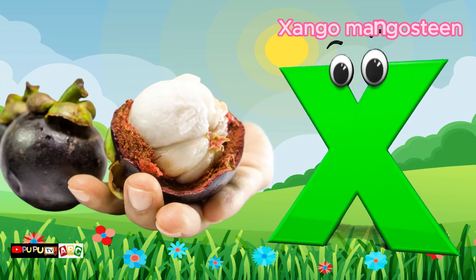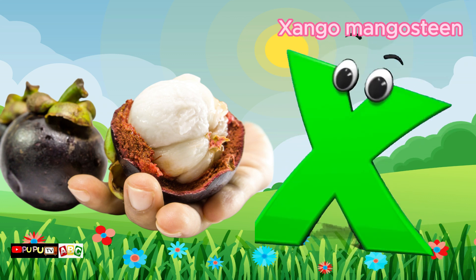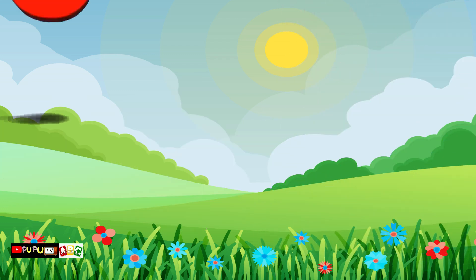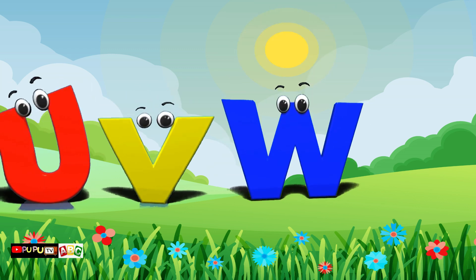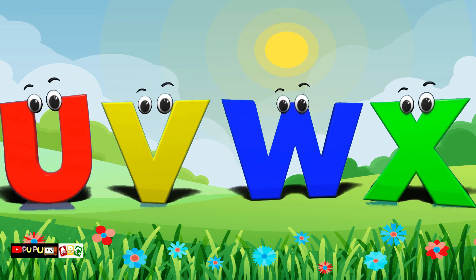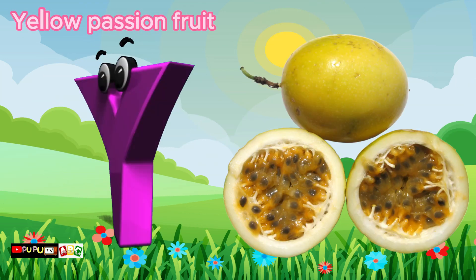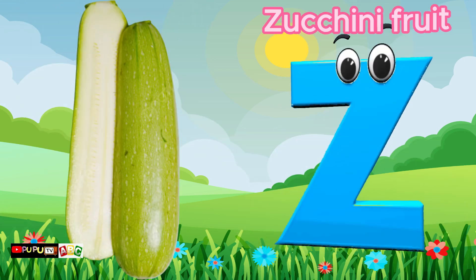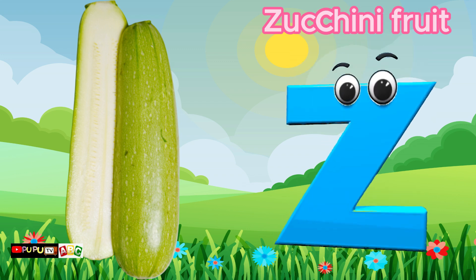X is for Xango Mangosteen. Y is for Yellow Passion Fruit. Yellow Passion Fruit. Z is for Zucchini Fruit. Zucchini Fruit.